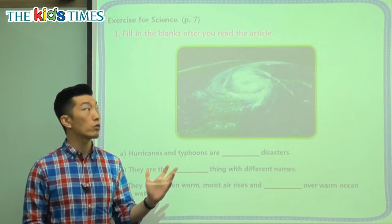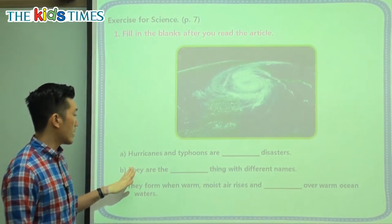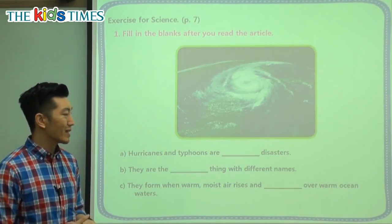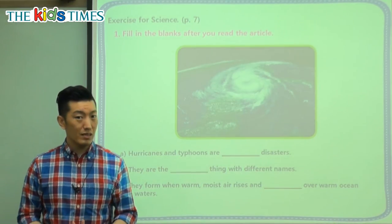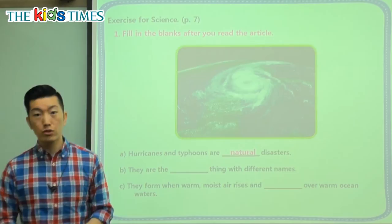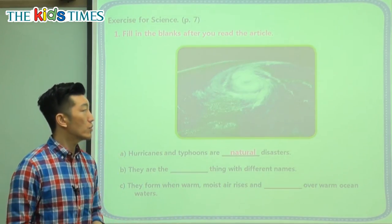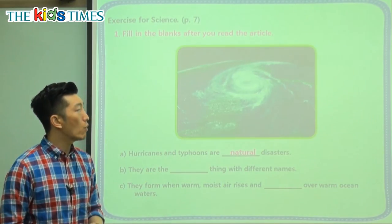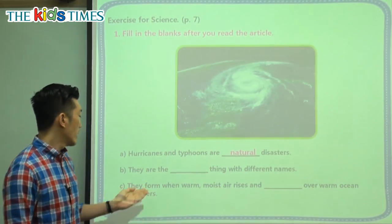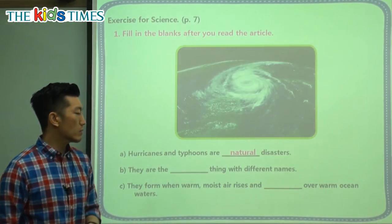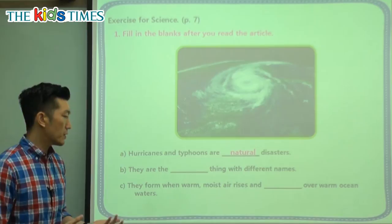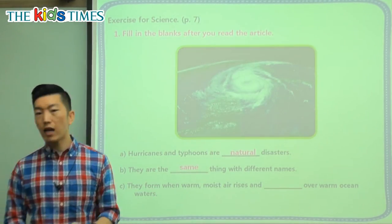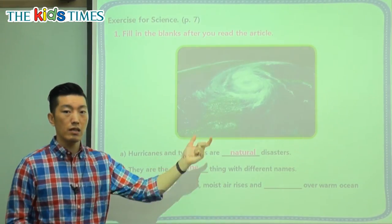Let's look at our questions for today's reading. First, hurricanes and typhoons — what kind of disasters are they? Are they man-made disasters? No, they are natural disasters — they take place in nature; you and I don't create them. Next: they are the same thing with different names. Hurricanes and typhoons — same thing, just different names.